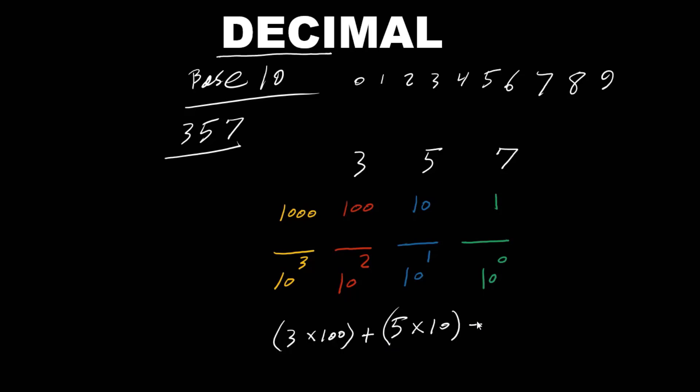plus 7 times 1, which equals 357. Also, as we can see, every time we moved to the left, it multiplied by 10. So 1 times 10 is 10, 10 times 10 is 100, and 100 times 10